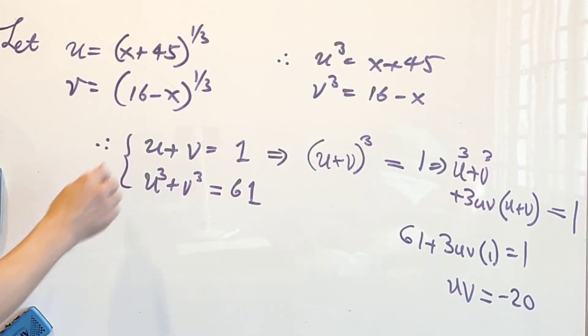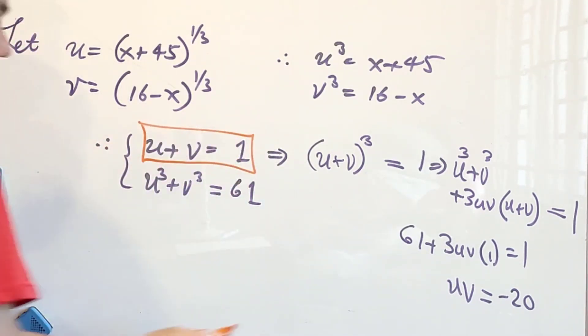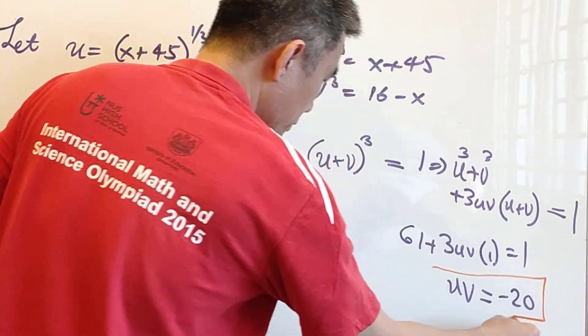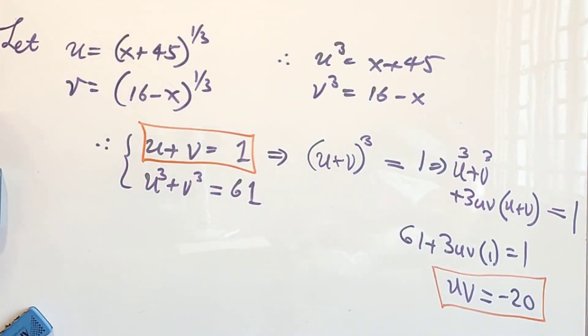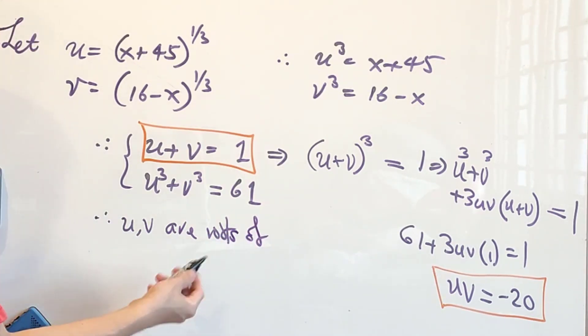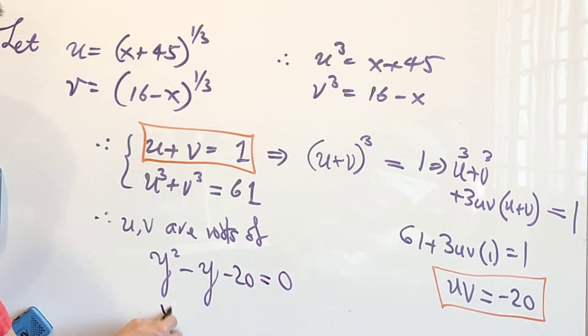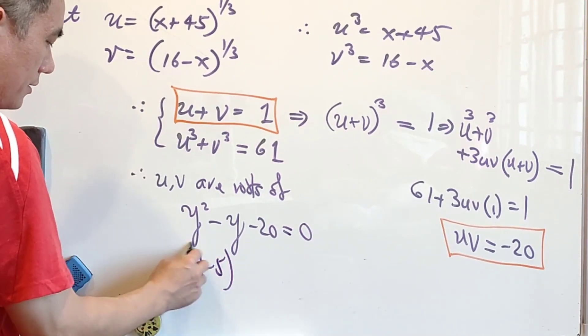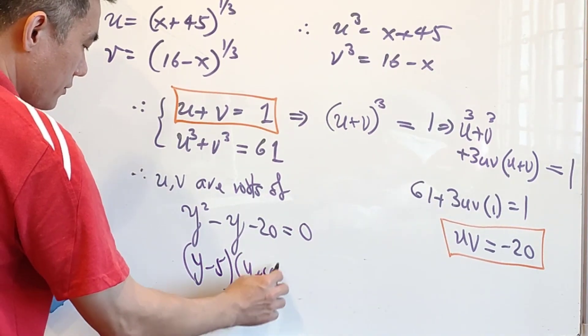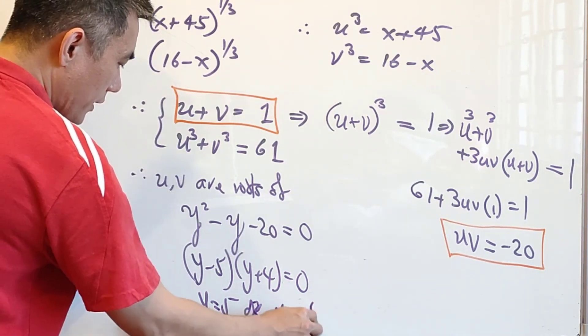So now we have this information that the sum is equal to 1 and the product is equal to negative 20. And therefore, y minus 5 times y plus 4 equals to 0. y equals to 5 or y equals to negative 4.